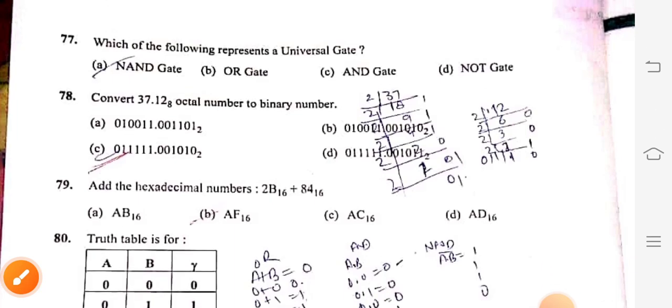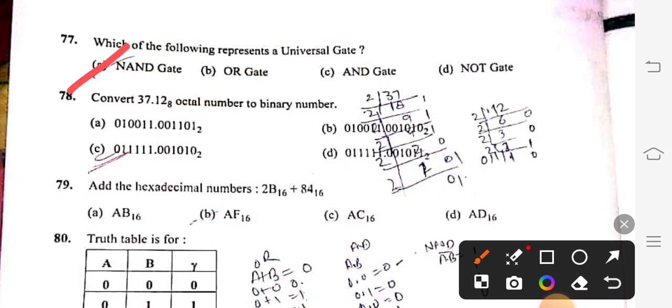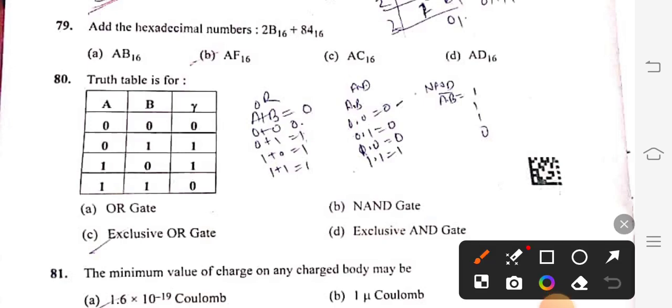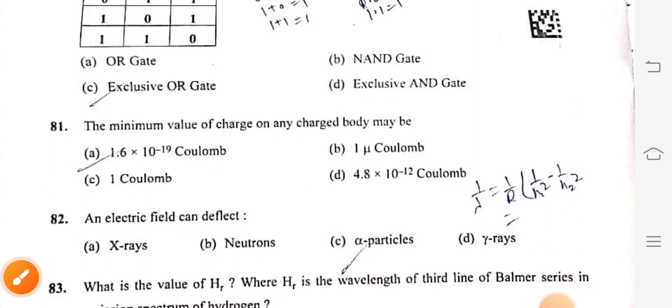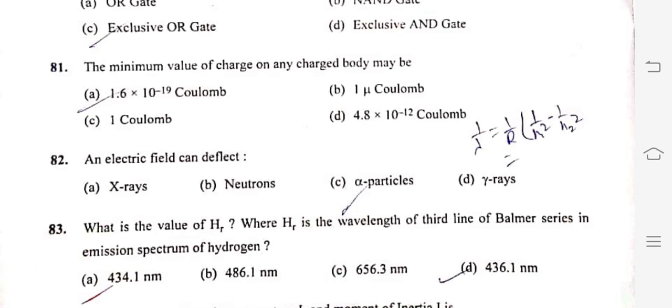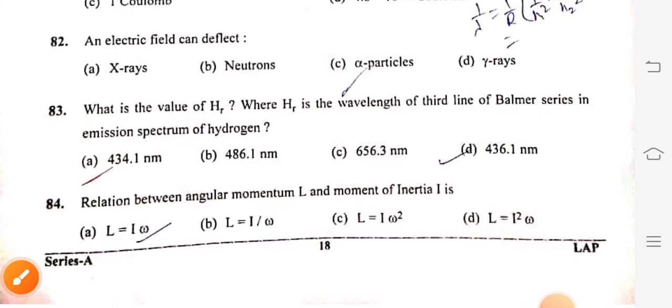Question 75: Laser is a coherent source, option C. Question 76: The quantum of energy in lattice vibration is phonon, option C. Question 77: NAND gate is a universal gate. Question 78: Convert 37.12 octal number to binary number, option C. Question 79: Add the hexadecimal numbers 2B16 plus 8416, right option is AB16, option B. Question 80: The truth table for AB with given output Y is for exclusive OR gate, option C.